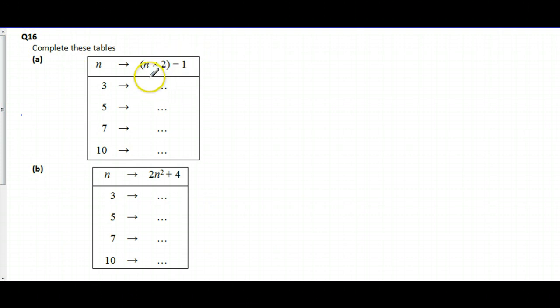In this case, I've got to do 3 times 2, take away 1, that gives me 6, take away 1, calculating my brackets first, which gives me 5. In here, I've got to do 5 times 2, because it says my n is worth 5, so I'm doing 5 times 2, take away 1, which is really 10 minus 1, which is 9. Or 7 times 2 minus 1, which you can now calculate in your head, which is 13. And 10 times 2 minus 1, which is 20 minus 1, 19.